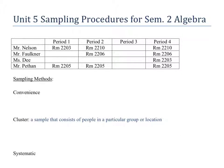Cluster sample procedure. By definition, a cluster is a sample that consists of people in a particular group or location. You're going to ask a group of people and they're bound together by something physical. You could say you're going to go to one room and ask everyone in that room — they are bound to that room and they were picked because they're in that room.